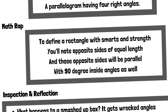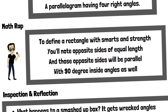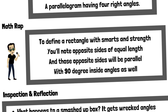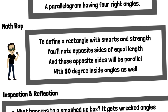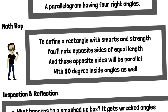Math Rap. To define a rectangle with smarts and strength, you'll know opposite sides of equal length. And those opposite sides will be parallel, with 90 degree inside angles as well.